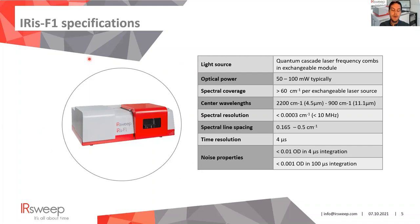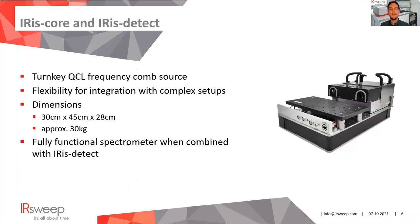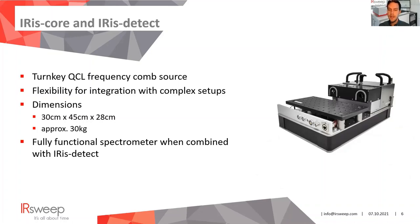Here you see a picture of the Iris F1 spectrometer. There is also another version — the Iris Core coupled with an Iris Detect. The Iris Core is the receiving bay for the laser modules, giving maximum flexibility to integrate it into any lab setup. It is about 30 by 45 centimeters and 30 kilograms. When combined with the Iris Detect — as was done by Vasilij Savitsky — you get a fully functional infrared spectrometer with two detectors and all the digitization and signal processing needed to convert detector signals into a mid-infrared spectrum.